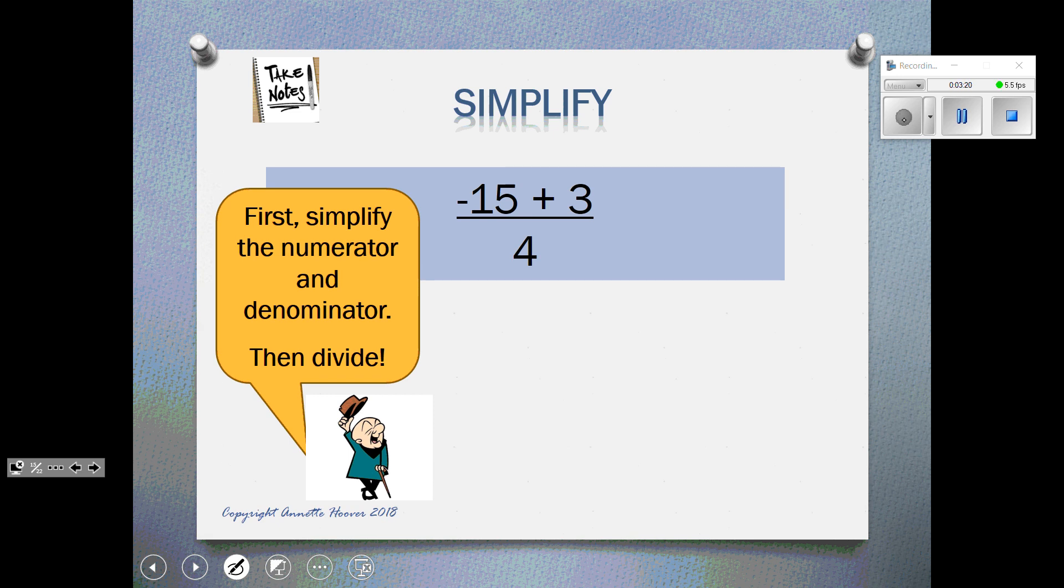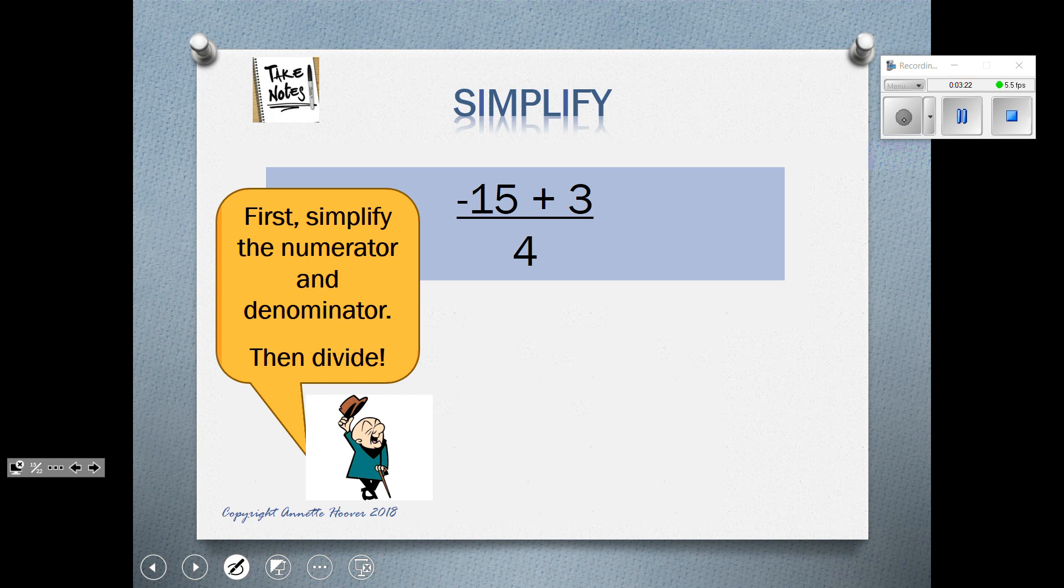Now, as we move towards algebra, we're going to increase the difficulty level a little bit. Here we have in the numerator, negative 15 plus 3, and then we have the division bar divided by 4. The first thing we need to do is simplify either the numerator or denominator and get it down to one number. So in the numerator on top, we have two numbers.